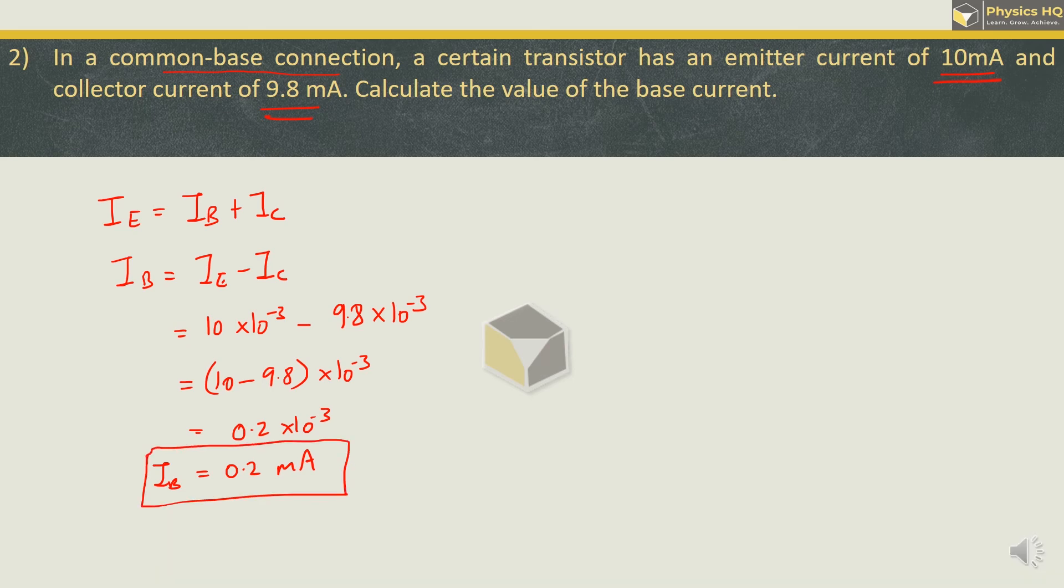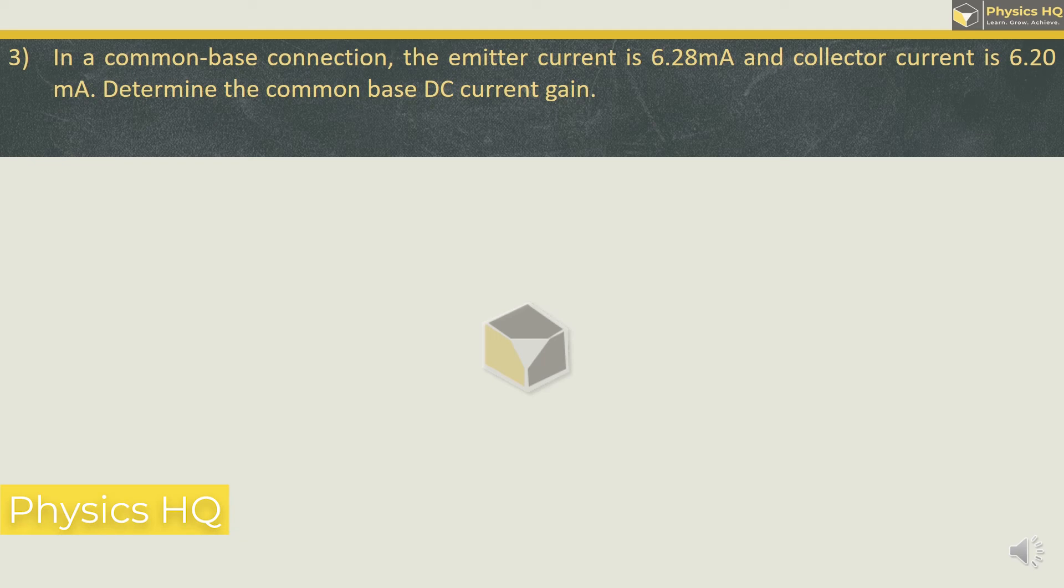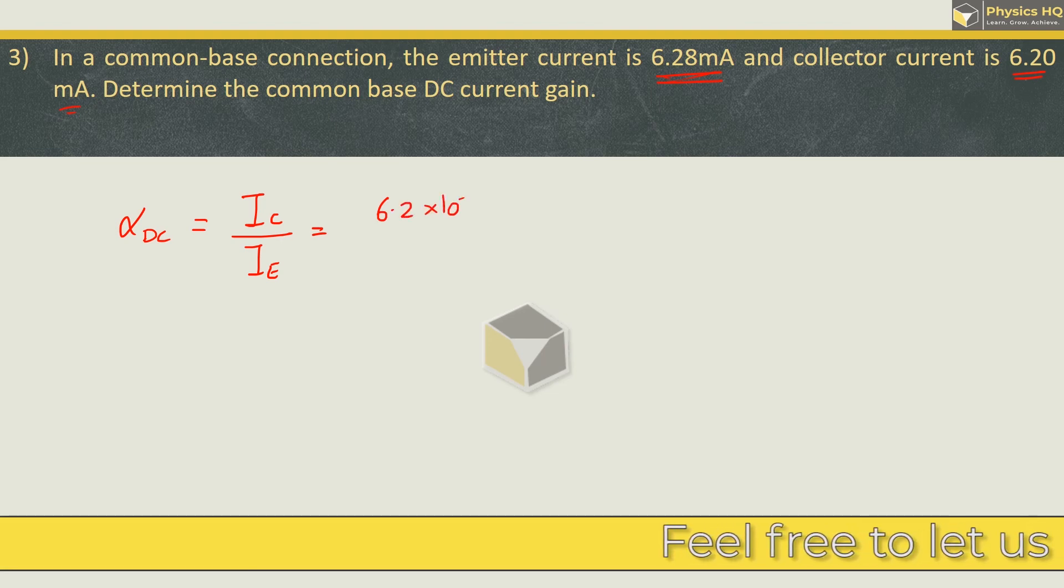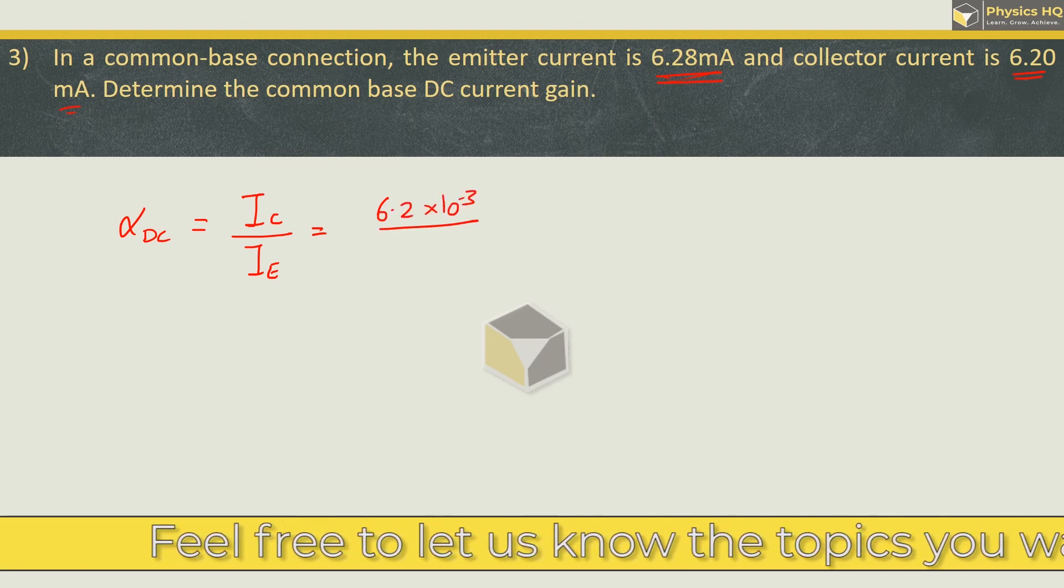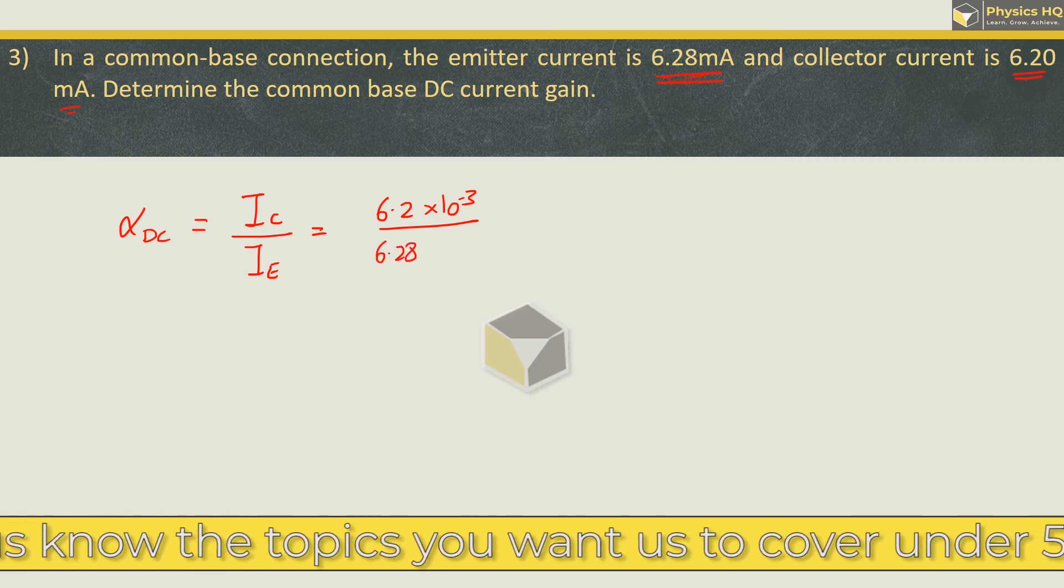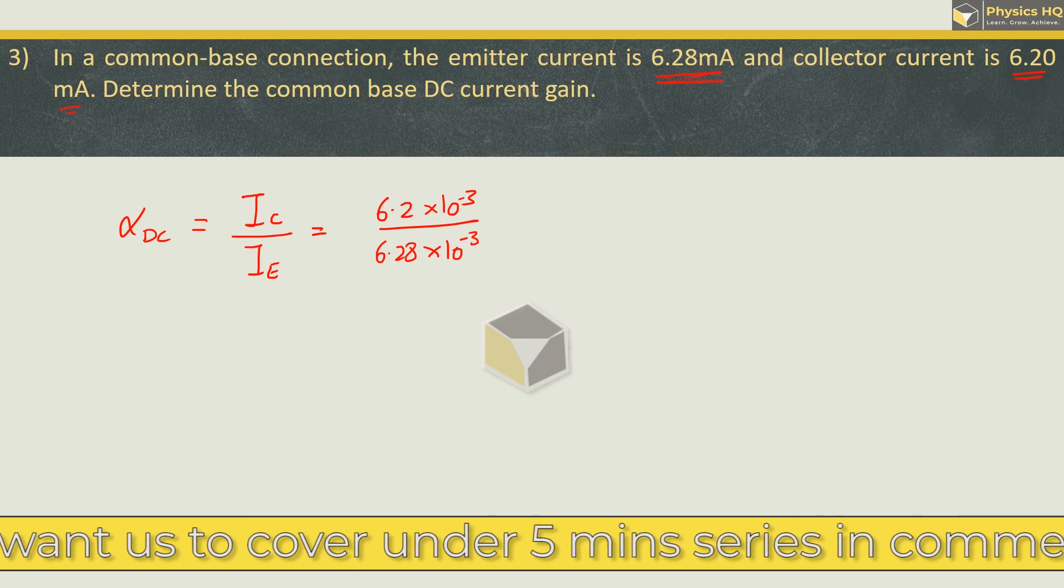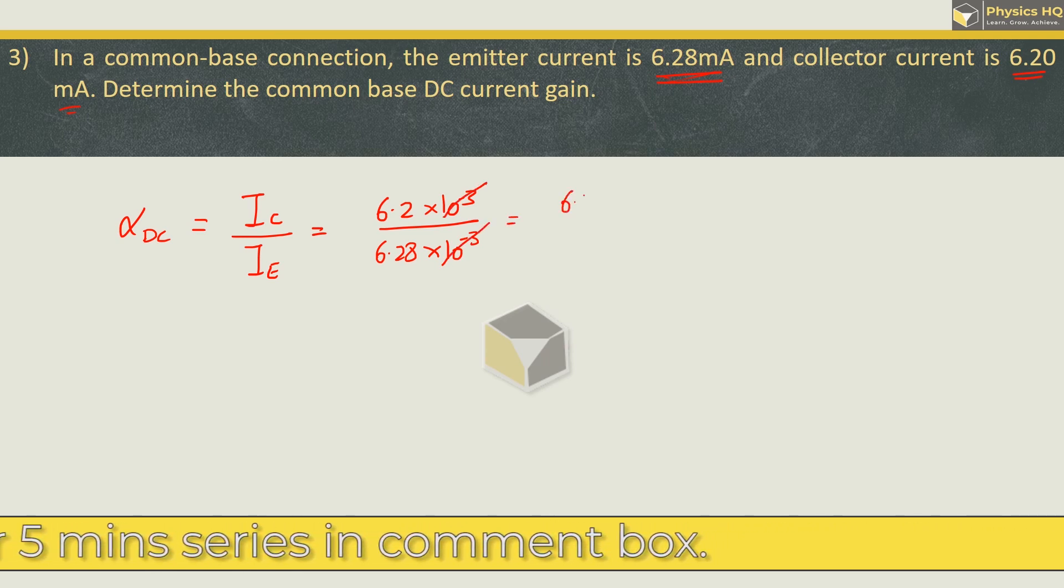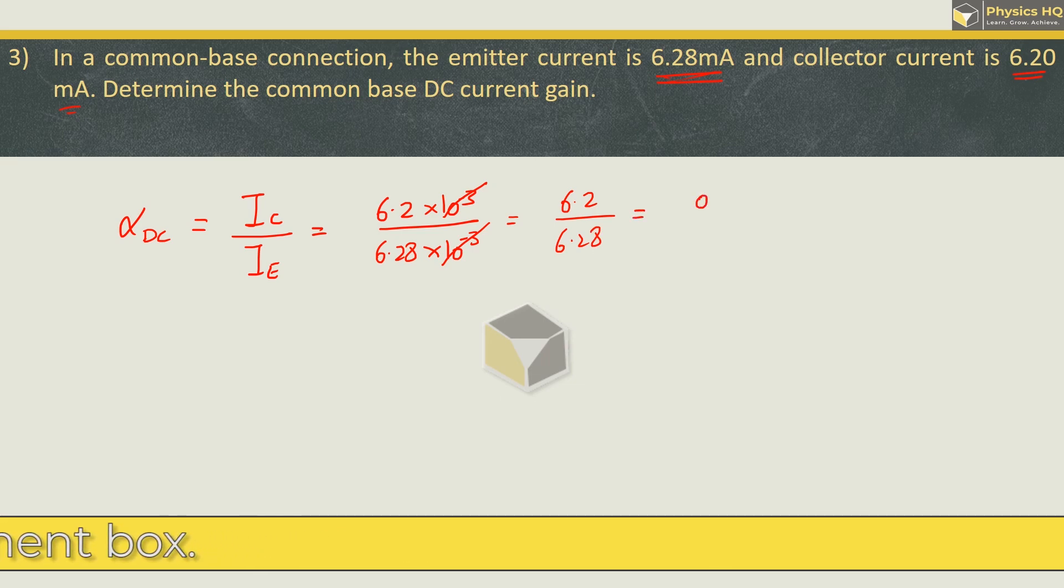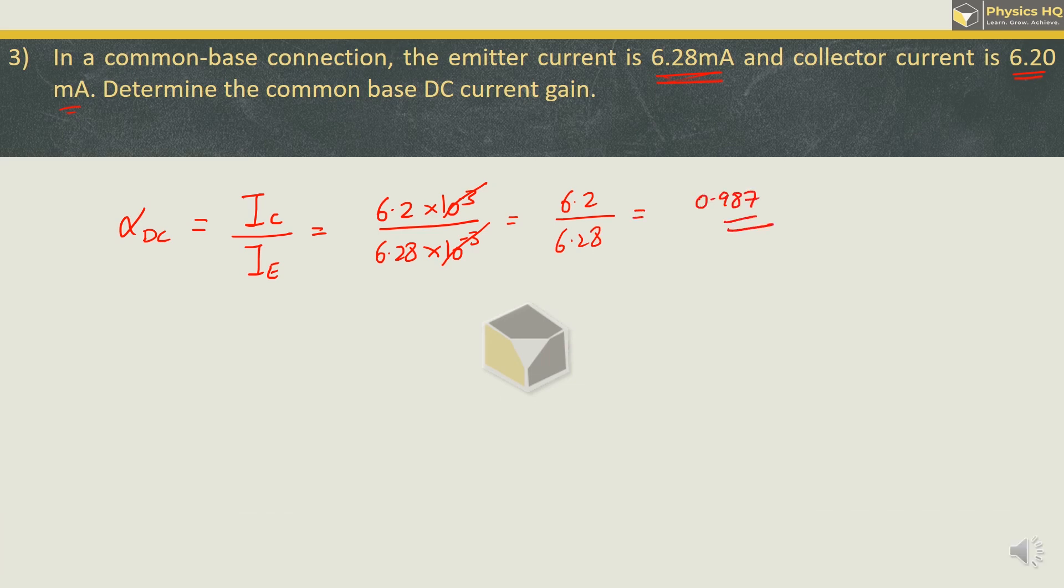Let us go ahead to the next sum. In a common base connection, the emitter current is 6.28 mA and collector current is 6.2 mA. Determine the common base DC current gain. This is given by IC upon IE. So 6.2 times 10 raised to minus 3 divided by 6.28 times 10 raised to minus 3 gives us 0.987.